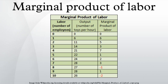When the marginal product of labor is increasing, this is called increasing marginal returns. However, as the number of workers increases, the marginal product of labor may not increase indefinitely. When not scaled properly, the marginal product of labor may go down when the number of employees goes up, creating a situation known as diminishing marginal returns. When the marginal product of labor becomes negative, it is known as negative marginal returns.